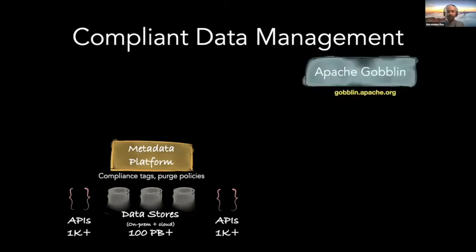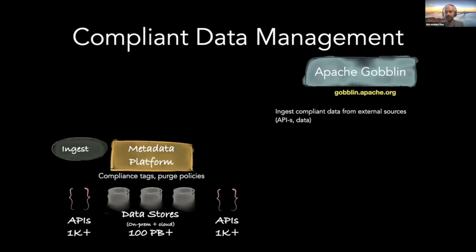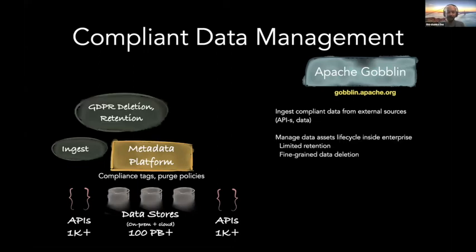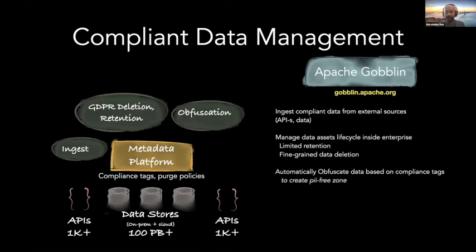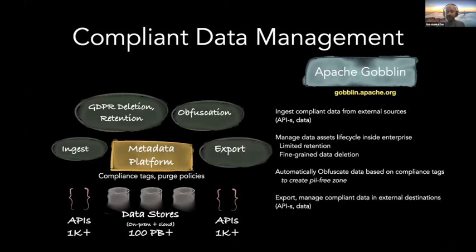We use this big thing called Apache Goblin, which is our massive data ingestion and lifecycle management system. It does all of these things as operators on top of the metadata — you can ingest data from external APIs, manage its lifecycle inside, do limited retention, do fine-grained data deletion like right to be forgotten, and automatically create obfuscated data to create PII-free zones. And finally, you can export and manage this data in external APIs. So if I've got some data in Salesforce or Dynamics, I can export it there, and when a customer wants their data deleted, we can actually fire off deletes against that external endpoint. We're really glad with how we've managed to do it — metadata first.